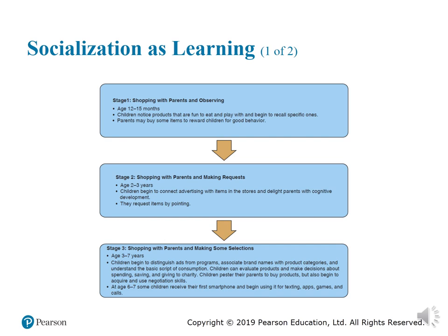The last stage: complex shopping, age eleven to sixteen years. Pre-teens and teenagers understand advertising tactics and appeals, become more practical about ads, and understand complex shopping scripts. They are adept at negotiation and able to influence purchase decisions. It is expected that 93% of smartphone users will be between the ages of 12 to 70.